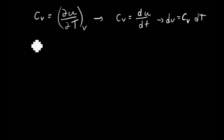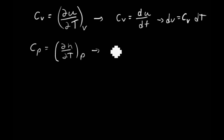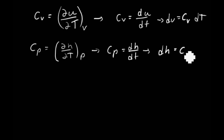Similarly, the specific heat at constant pressure is defined as the partial of h with respect to T at constant pressure, which gives cp = dh/dT for an ideal gas. And we also get dh = cp dT.